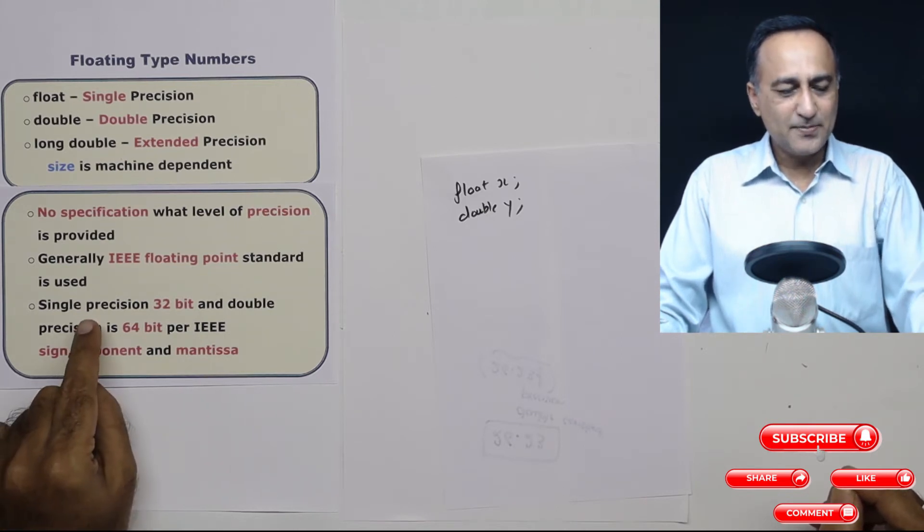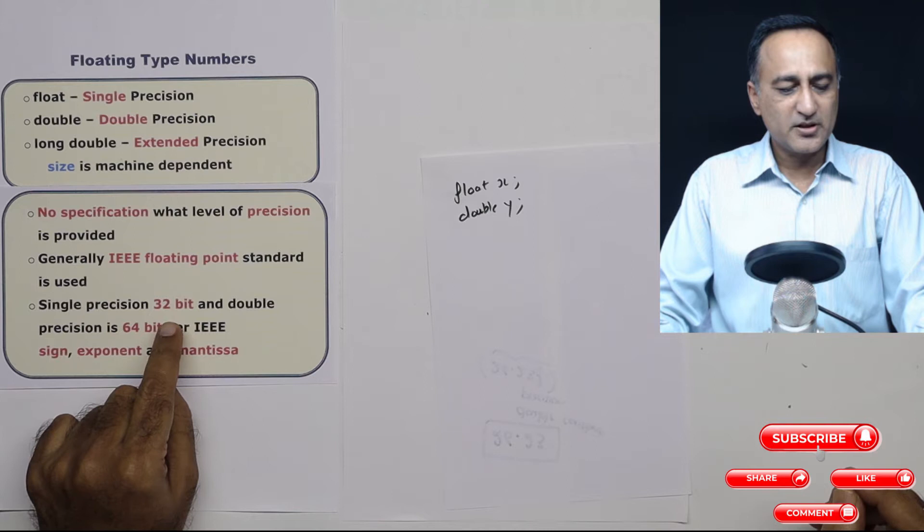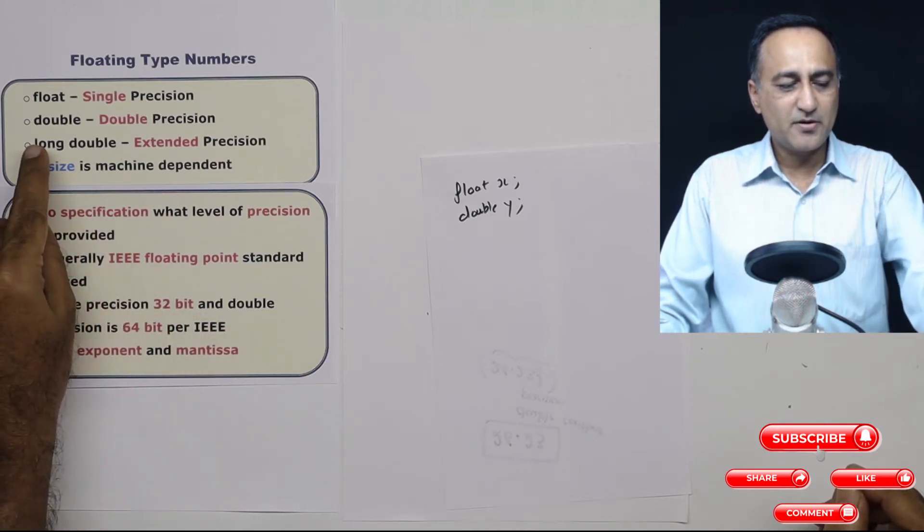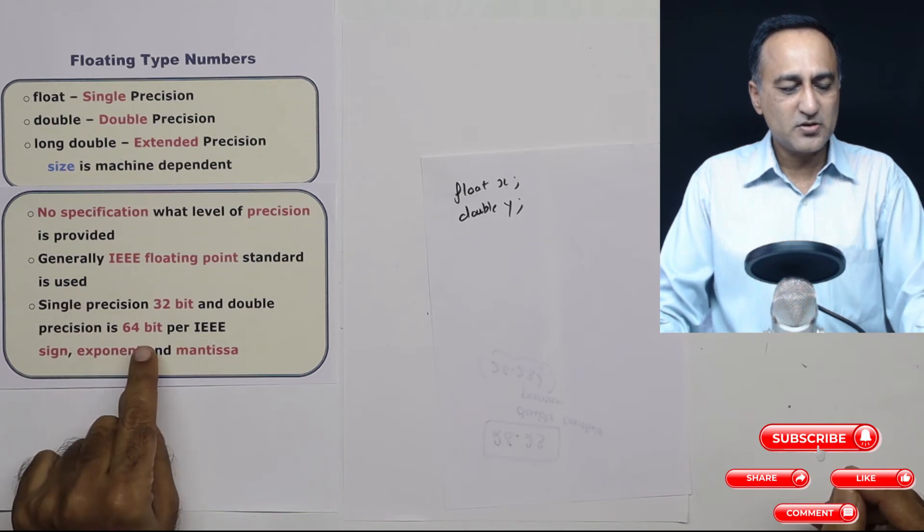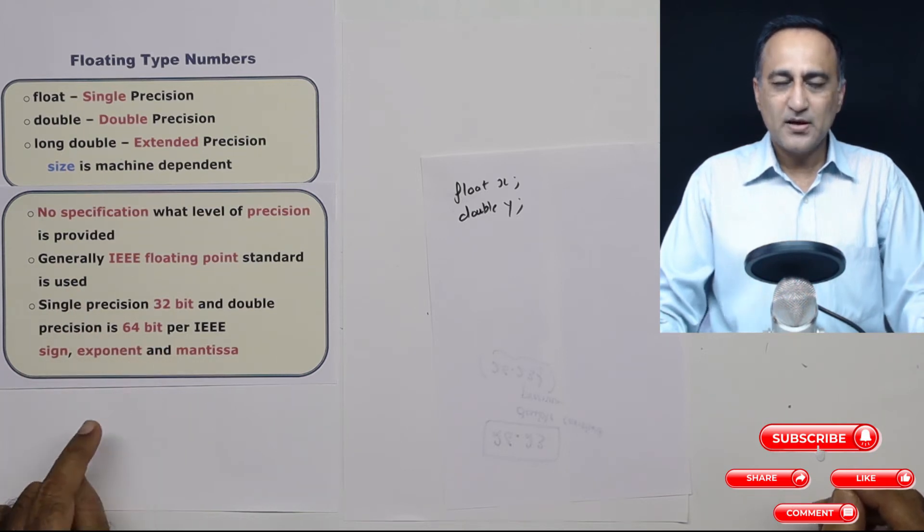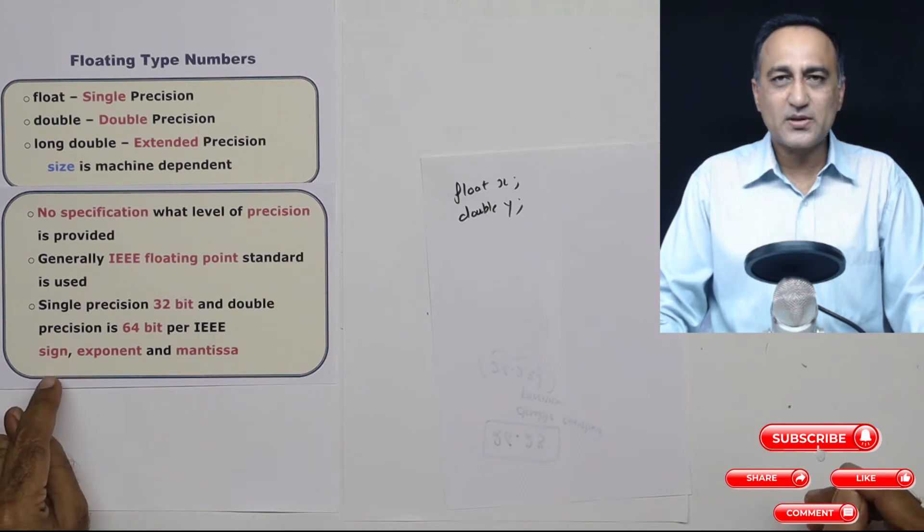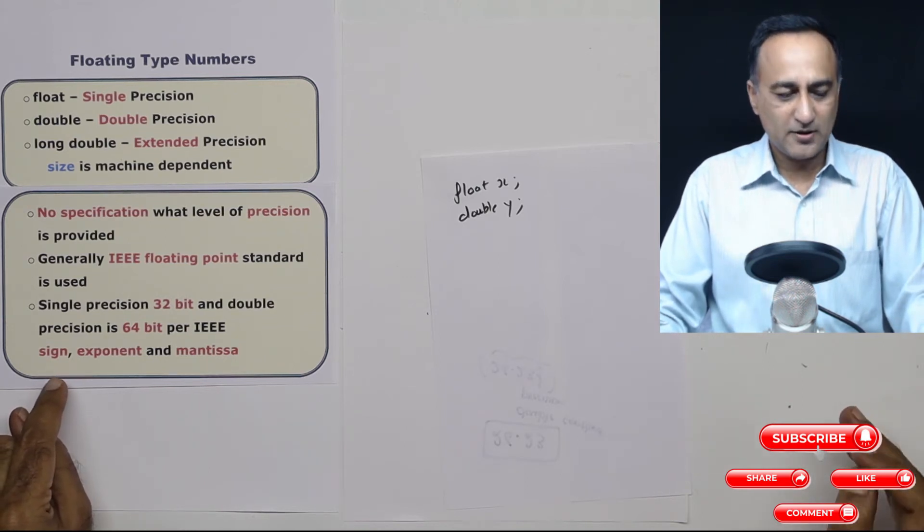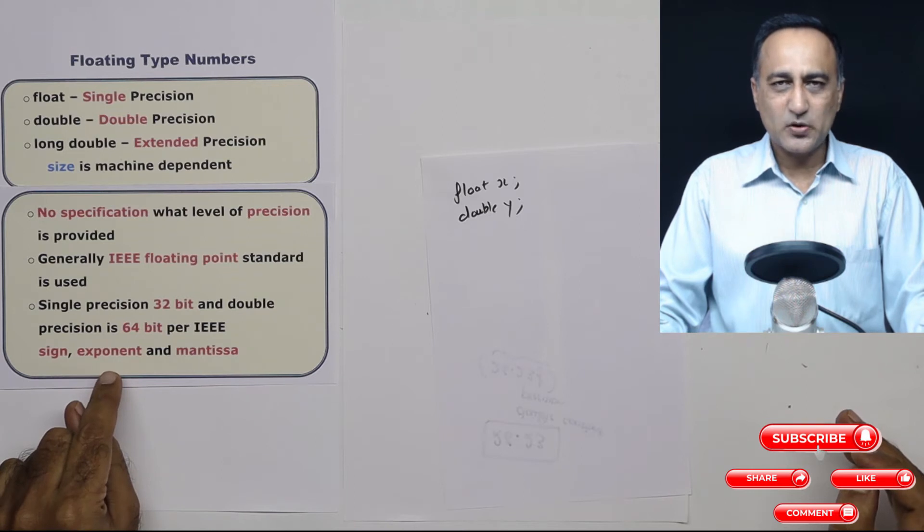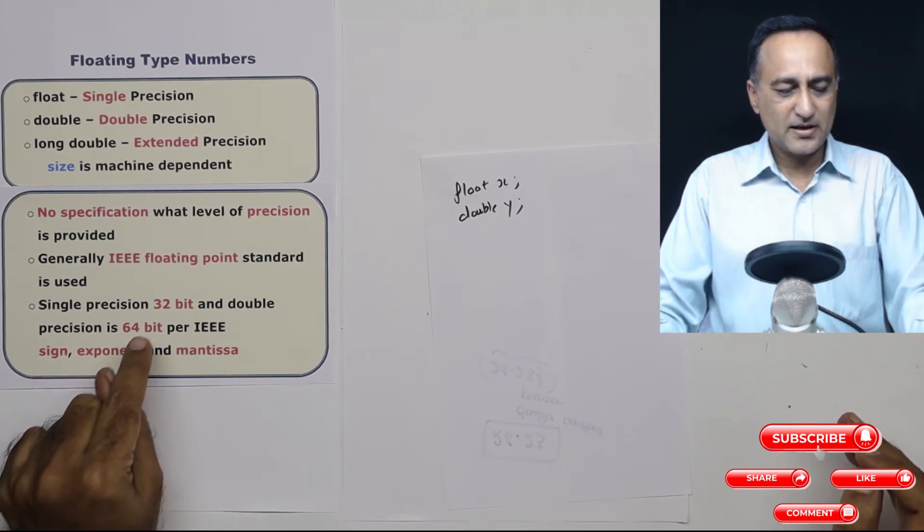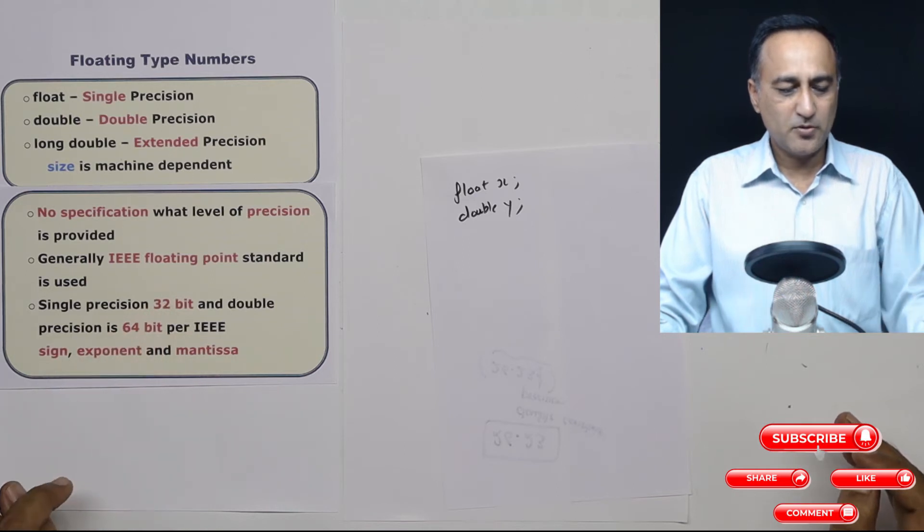In that, the single precision, that is the float, is represented using 32 bits and the double precision, which is the double type of a real number, is represented using 64 bits. There are three parts to a real number: one is the sign which tells whether the number is positive or negative, the next is the exponent, and then this is the mantissa. So these three parts are represented using 32 and 64 bits.